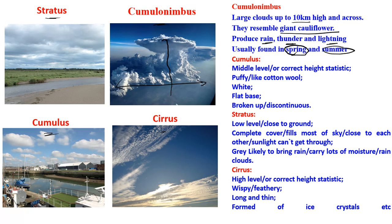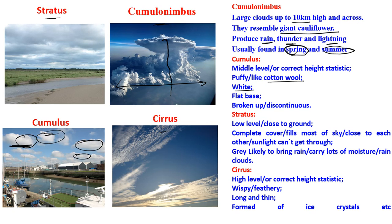Then we have the cumulus cloud, which looks like cotton wool. It is a middle to high-level cloud. It is usually white, has a flat base, and is usually broken up — discontinuous, not joined together.